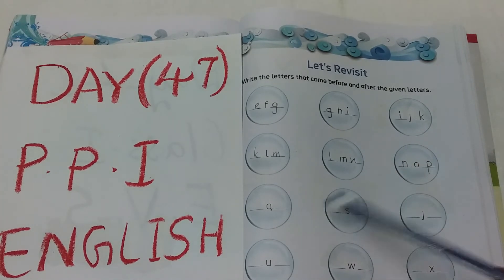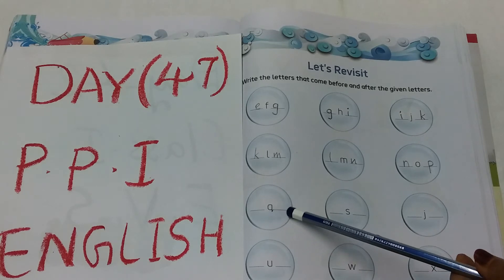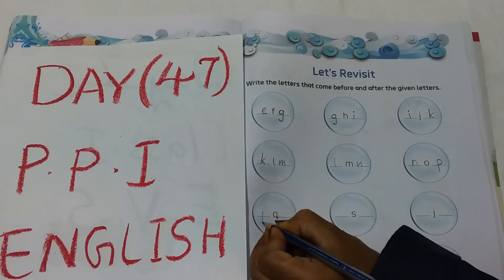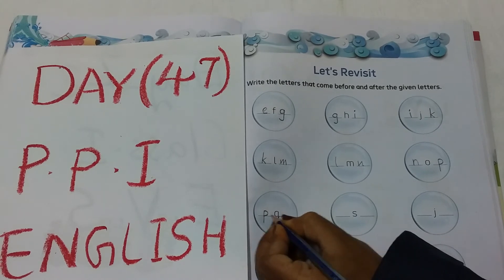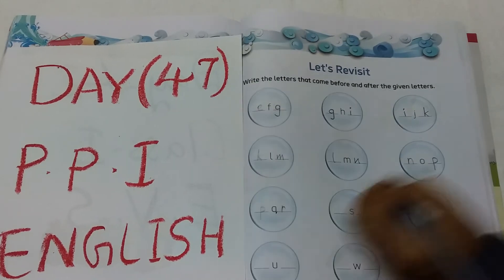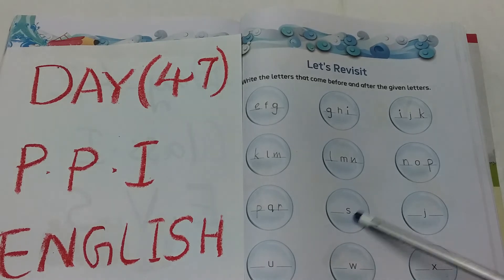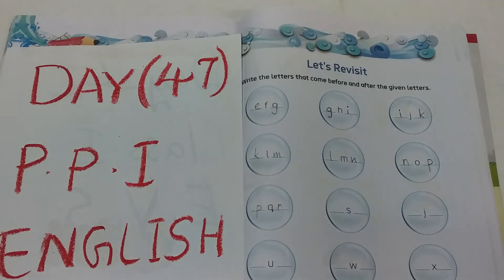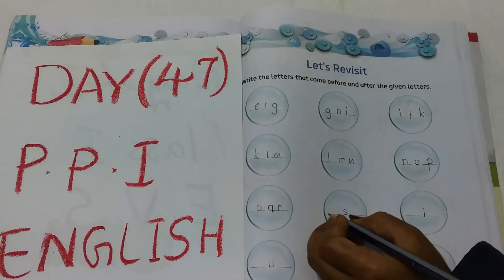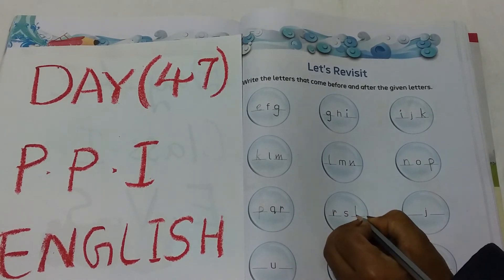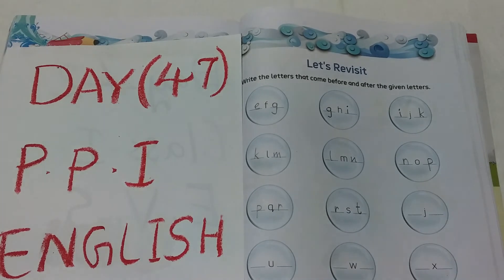Okay? See the next circle. It's a letter Q. Q before P. P, Q, R. See the next circle. Letter S. S before R. R, S, T.